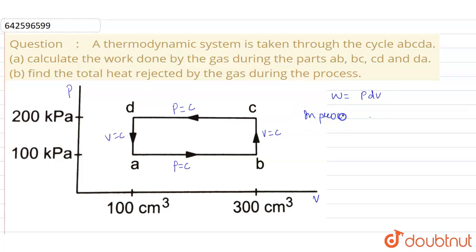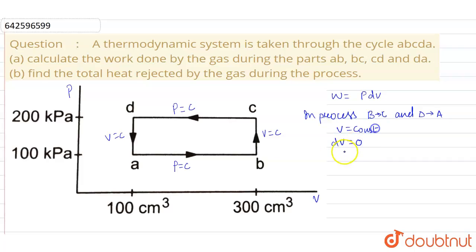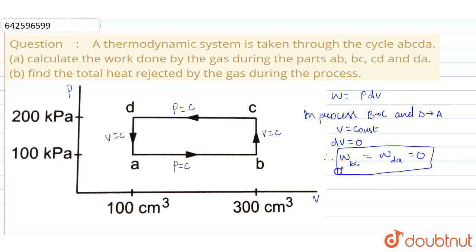Since the processes BC and DA are isochoric, the volume is constant, so the change in volume dV equals zero. Therefore, the work done in process BC equals zero and the work done in process DA also equals zero.